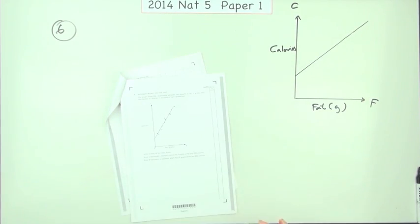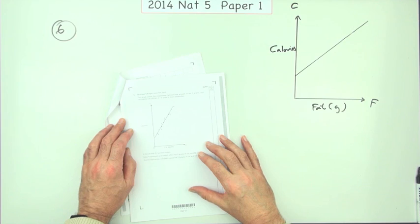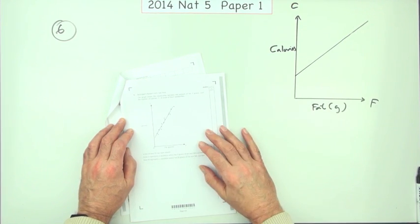Number six then from the first paper in the 2014 National 5 exam. What have we got? It's a line. Line question.